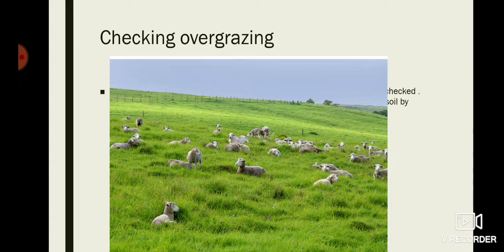For these animals, separate grazing grounds should be earmarked and crops should be grown in that area in large quantities so that they can graze throughout the year in that designated field. In this way, soil erosion caused by over-grazing can be checked.